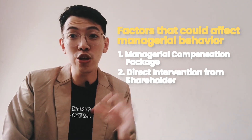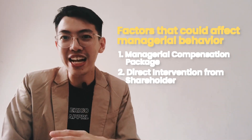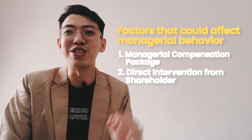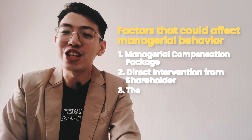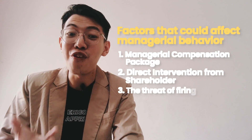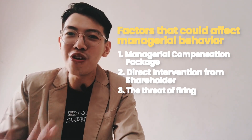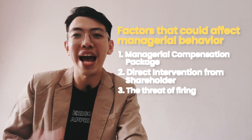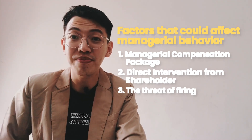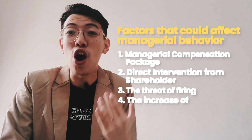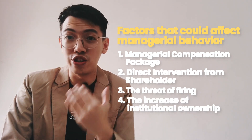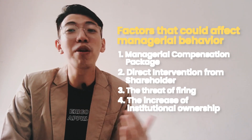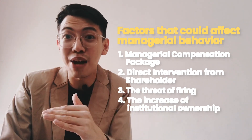With direct intervention from shareholders, the manager or director will be more respectful and follow what the shareholders want. The third factor is the threat of firing — if managers are worried about being fired, they will be more careful in how they act within the organization. The fourth factor is the increase of institutional ownership, so institutional owners will perform a supervisory function in the company.